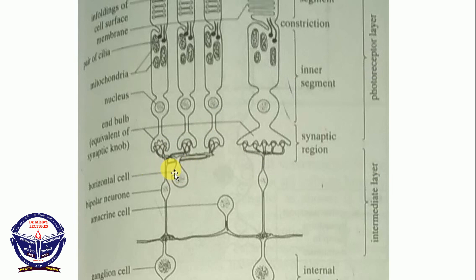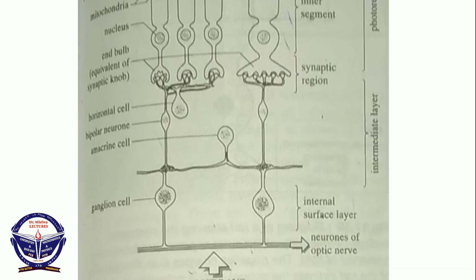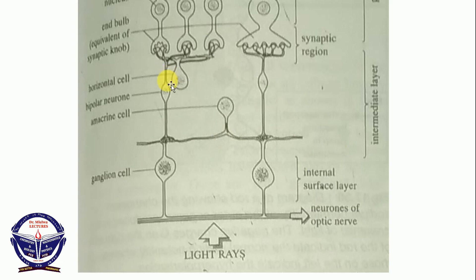Here we also have the horizontal cell — horizontal cells together with amacrine cells help carry out lateral inhibition. The nerve impulses that originate from the rods and cones synapse onto the bipolar neuron. From the bipolar neuron they synapse onto the ganglion cell. So we go from the photoreceptor layer, into the intermediate layer, out through the surface layer, and then the neurons of the optic nerve transmit the nerve impulses to the brain.